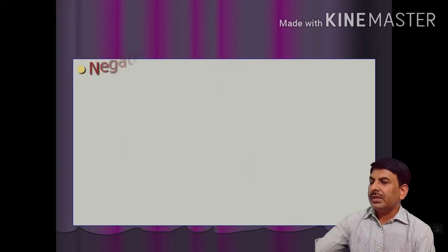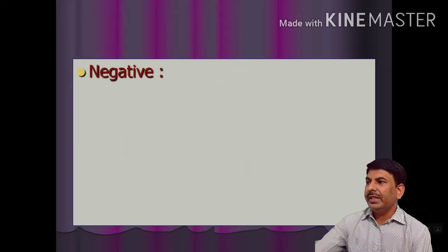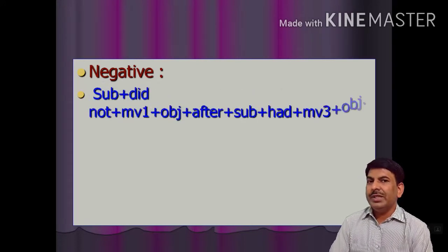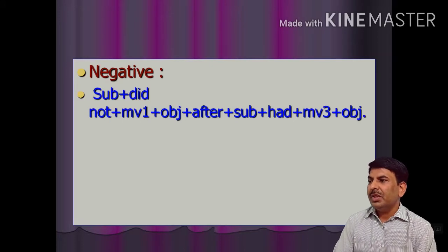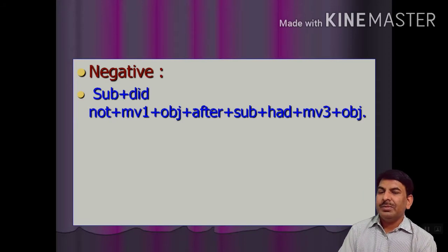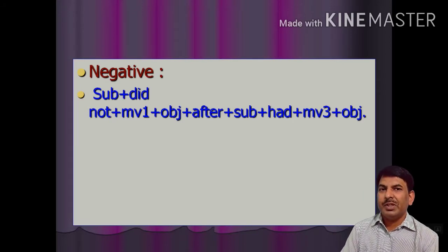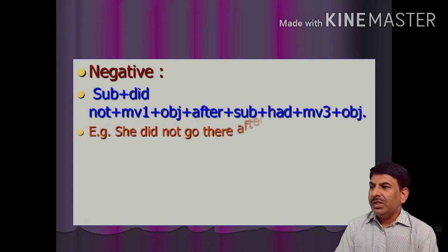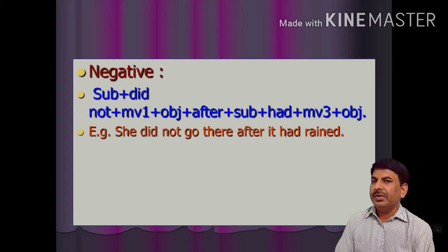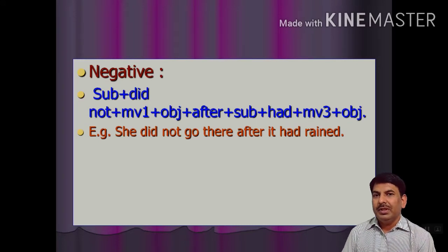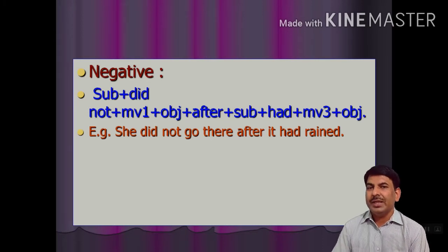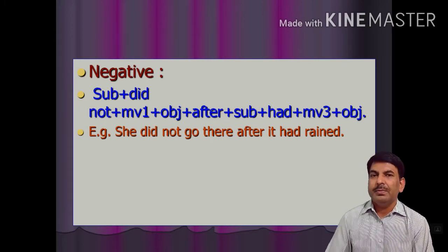Dear students, let us have the rule of the negative sentence. In negative sentence, the structure is: subject + did not + V1 + object + after + subject + had + past participle + object. For example: 'She did not go there after it had rained.' The first clause belongs to simple past tense and the second clause belongs to past perfect tense.